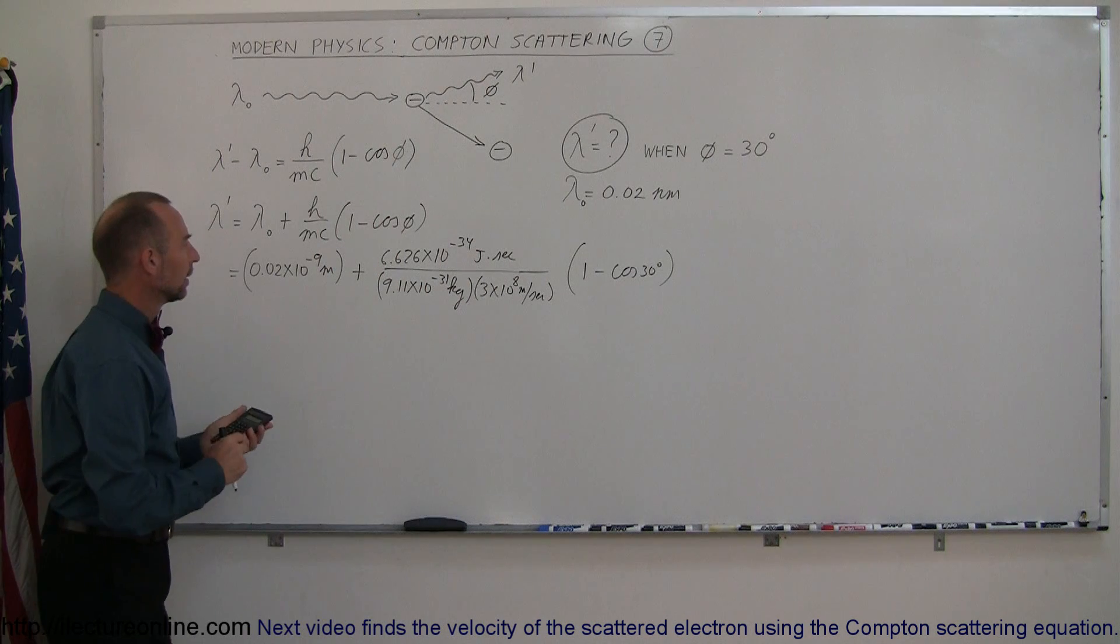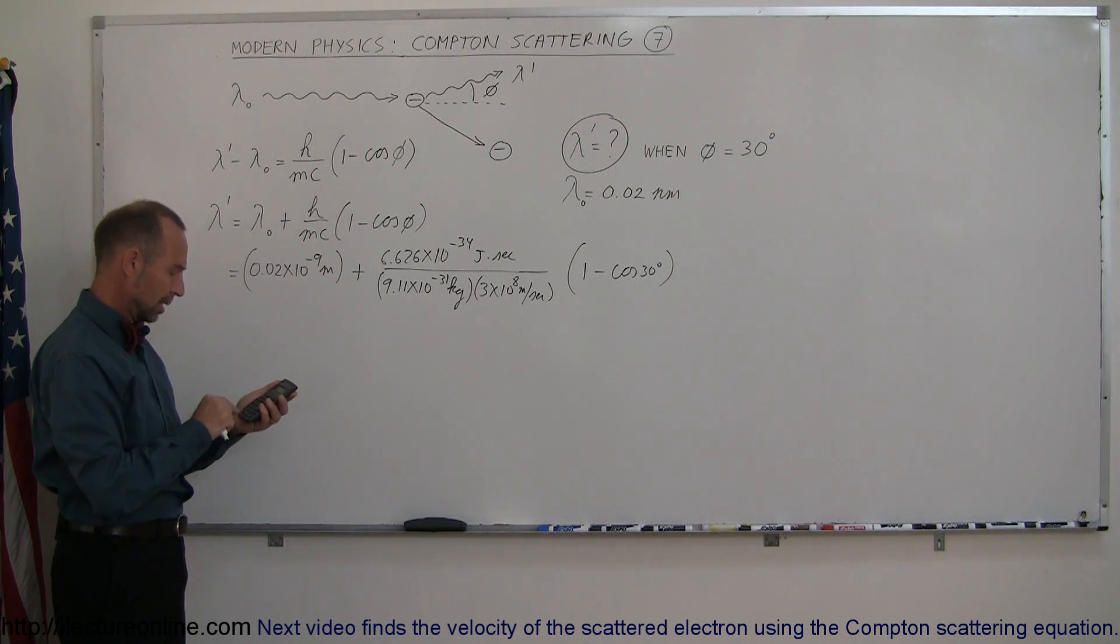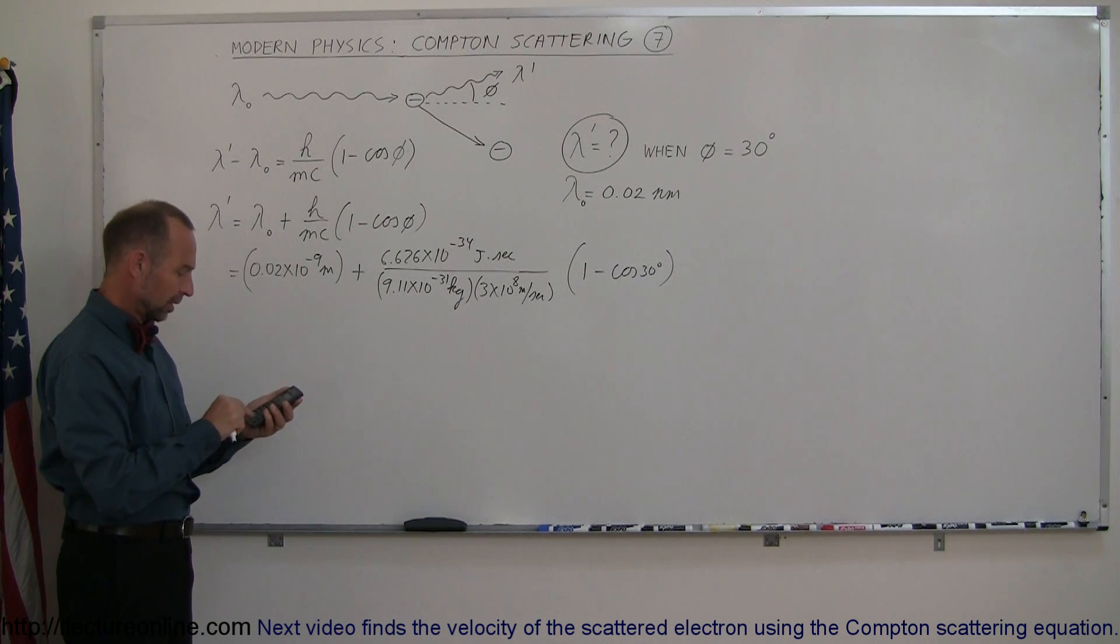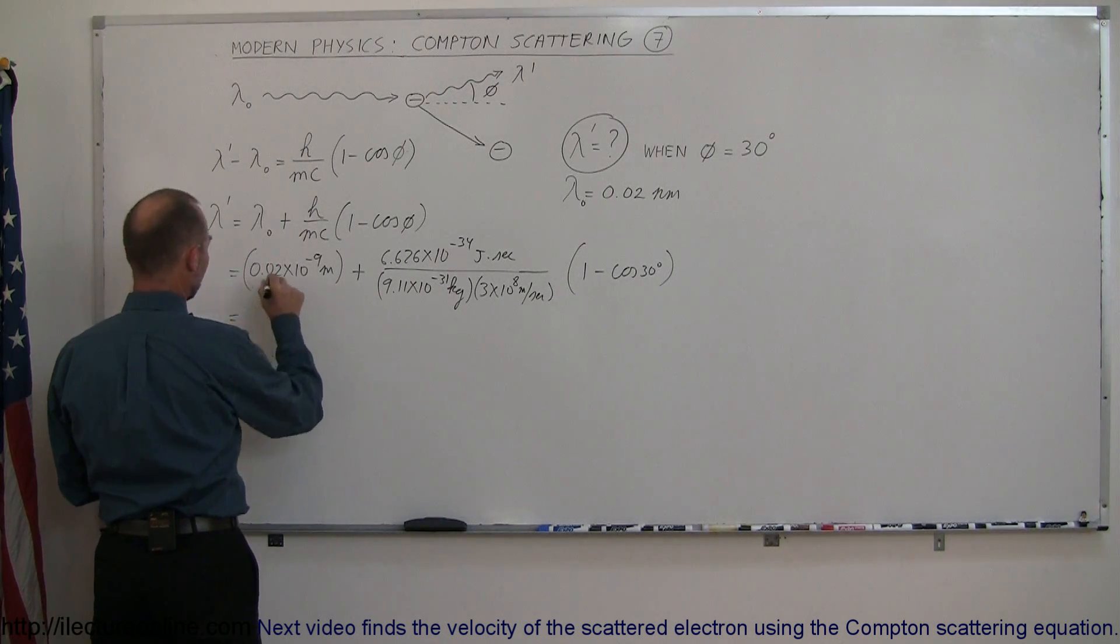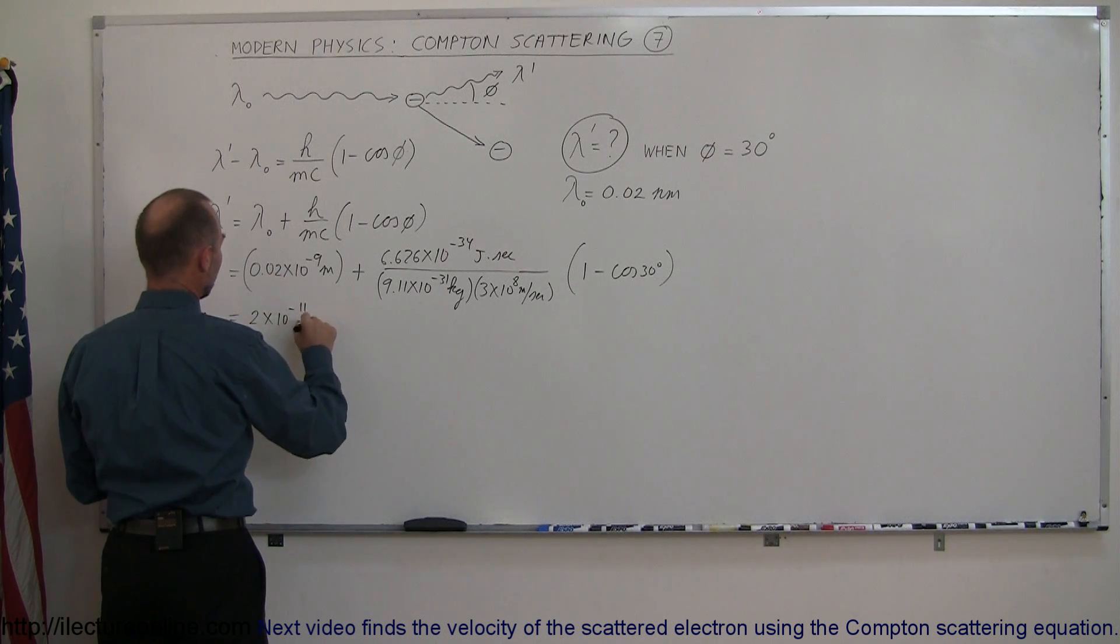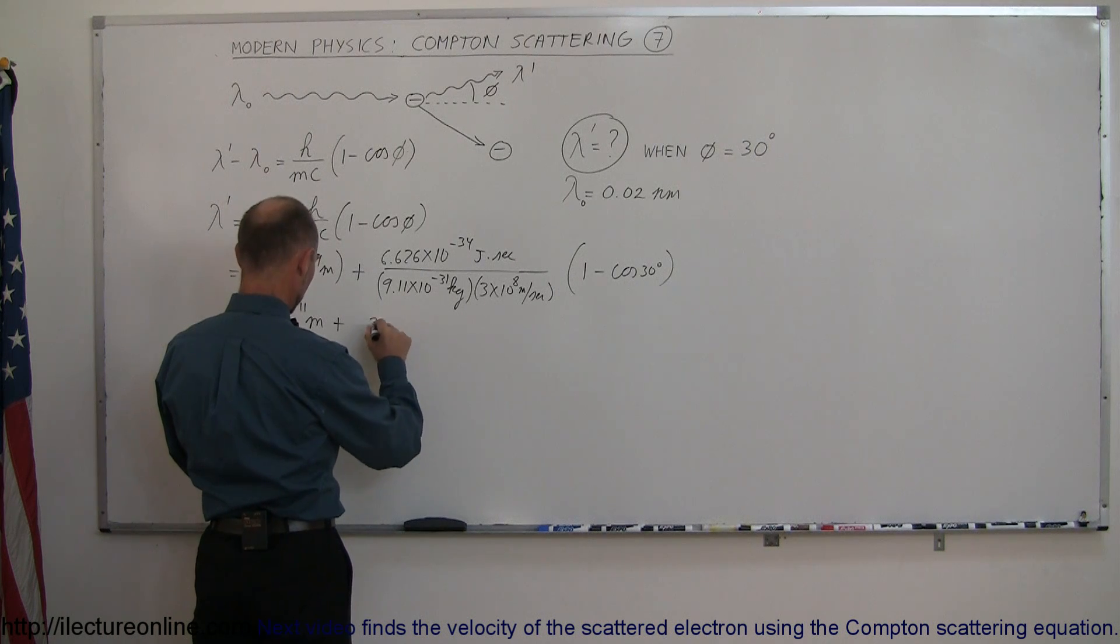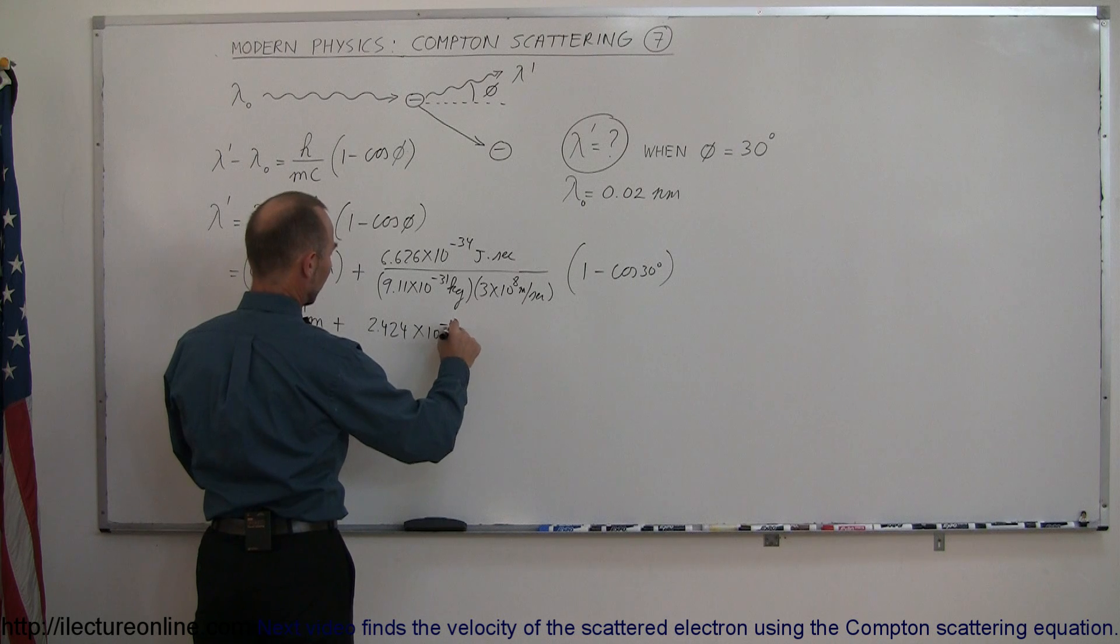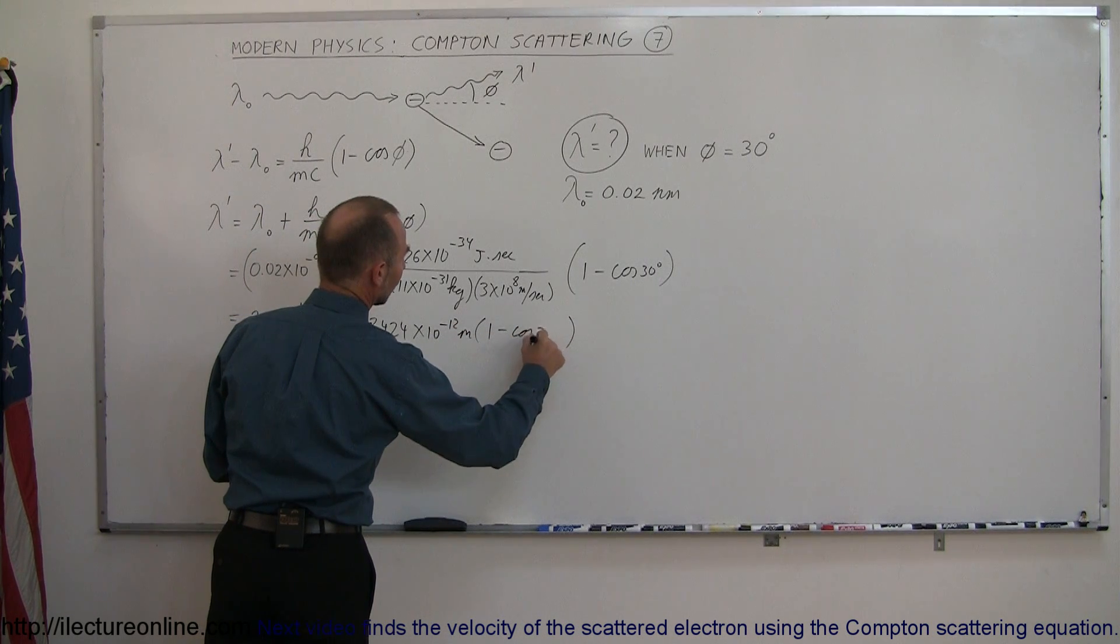So we have 6.626 e minus 34, divided by 9.11 e minus 31, divided by 3 e 8. Let's write that down. This equals 2 times 10 to the minus 11 meters, plus this quantity, which is 2.424 times 10 to the minus 12 meters, multiplied by 1 minus the cosine of 30 degrees.